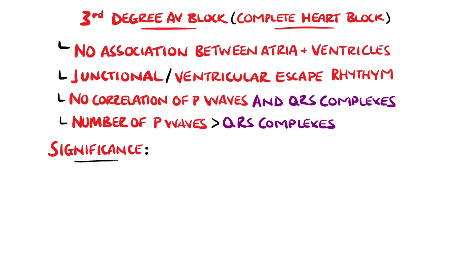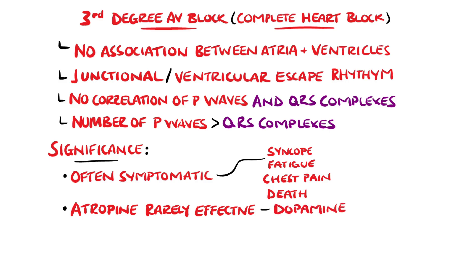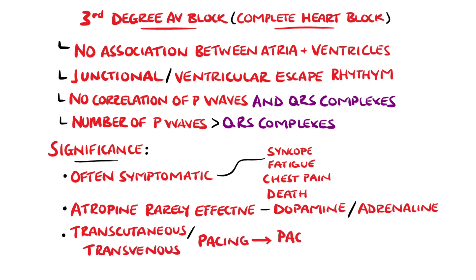Patients are often symptomatic with syncope, fatigue, chest pain, and shortness of breath, and are at risk of sudden cardiac death. Treatment can involve atropine, however it is rarely effective, and dopamine and adrenaline are other medical options. Transcutaneous pacing or transvenous pacing may be required before ultimately putting in a permanent pacemaker.